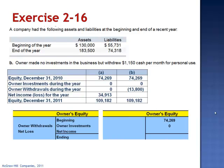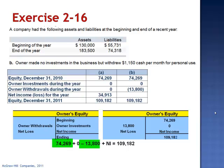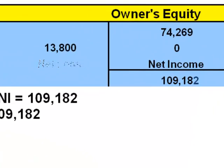Setting up the equation: $74,269 plus zero minus $13,800, plus net income equals $109,182. Combining $74,269 and negative $13,800 gives $60,469 plus net income equals $109,182. Subtracting $60,469 from each side gives net income of $48,713. So we don't have a net loss — we have net income of $48,713.